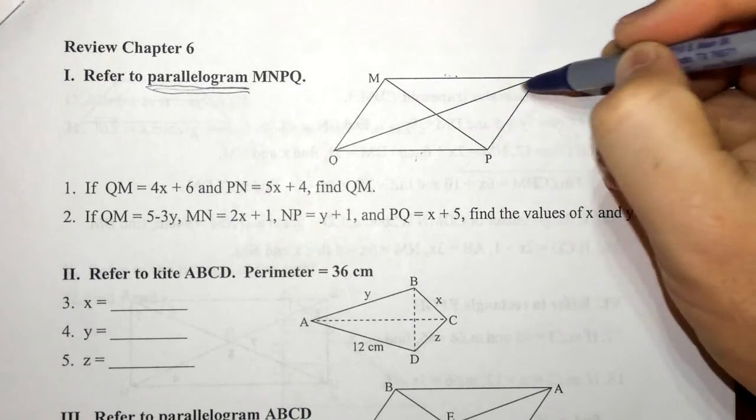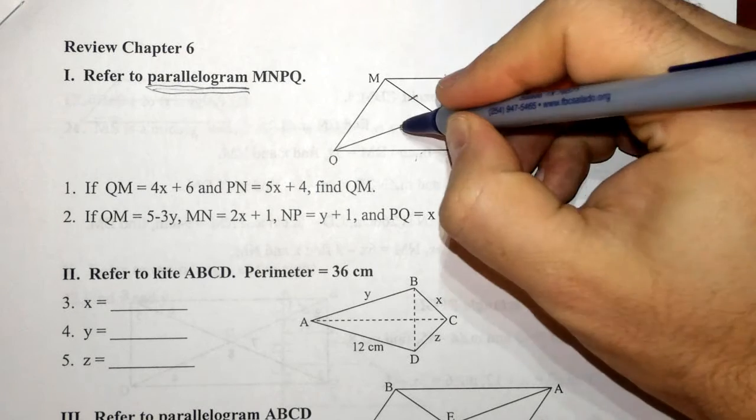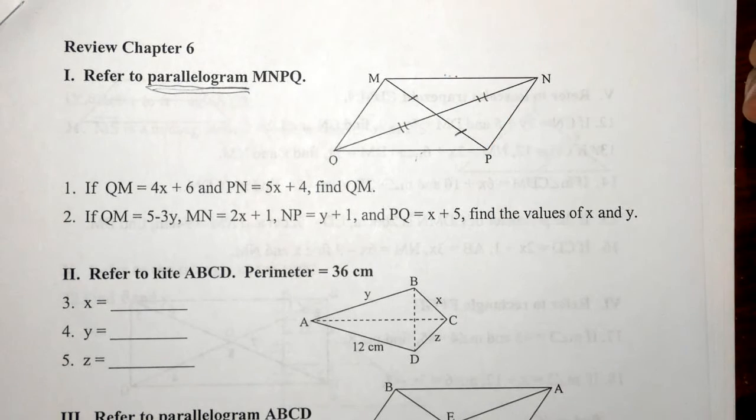We also know that our diagonals bisect each other, so here these two pieces would be congruent, and then also these two would be congruent.